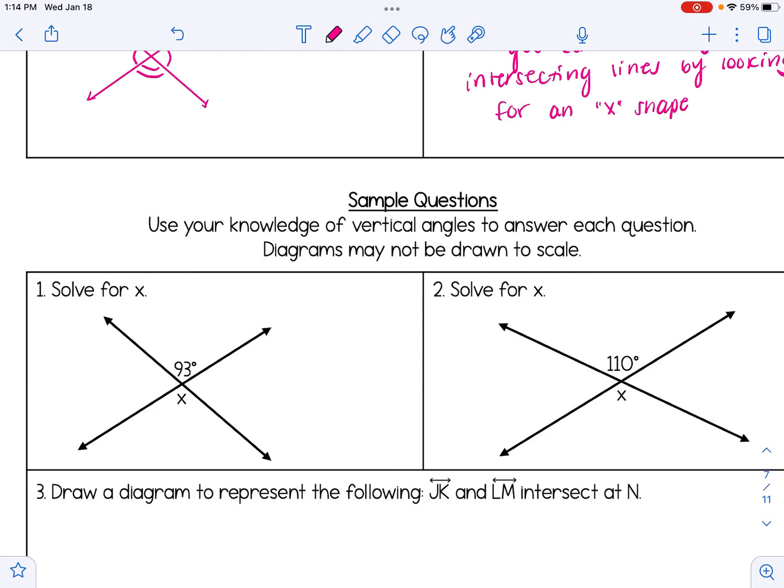Remember that the angles that are across from each other that are formed by the intersecting lines are congruent. If I look at number one, I see that given angle of 93, therefore X also has a measure of 93 degrees.